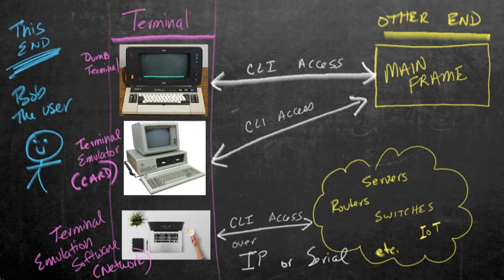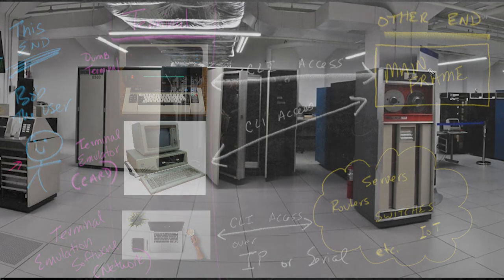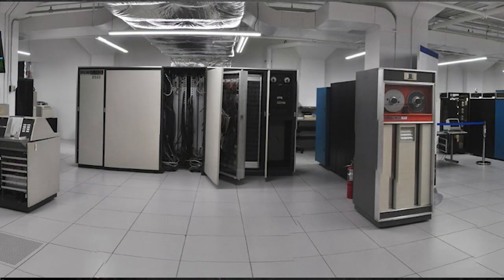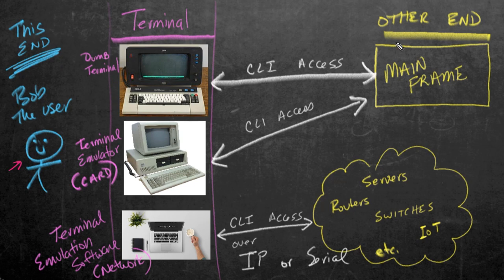So let's start off with this diagram. Over here on the far left, we have Bob the user, and Bob the user needs to get access to a system. Now in the old days, like in the 1970s and 80s, we had mainframes. Think of a mainframe like a huge giant computer stored in an air-conditioned and humidity-controlled room that people needed access to. And back in those days, we got access to that mainframe through a terminal.